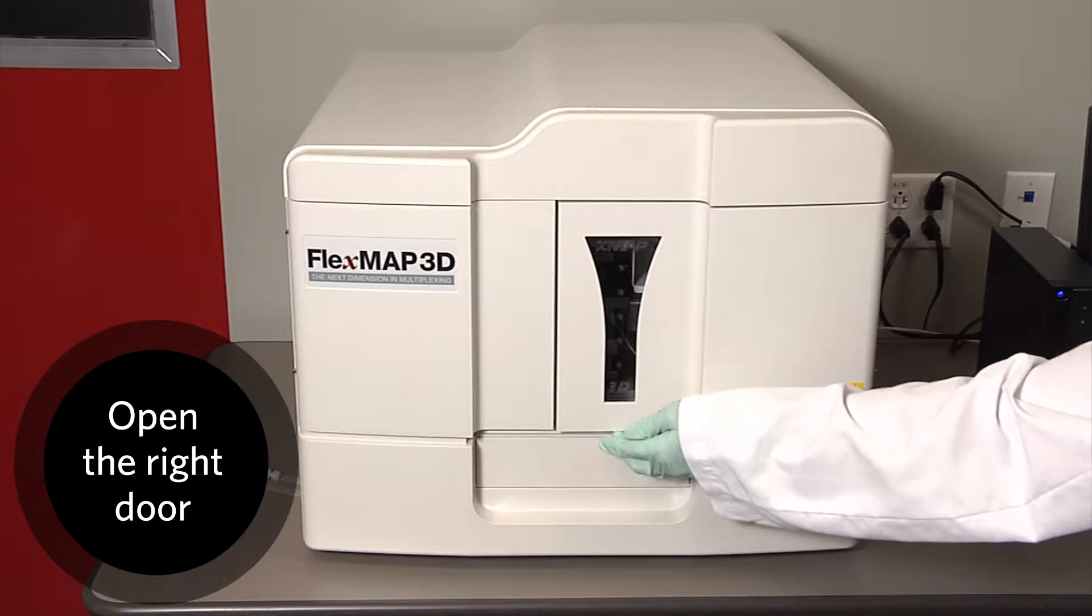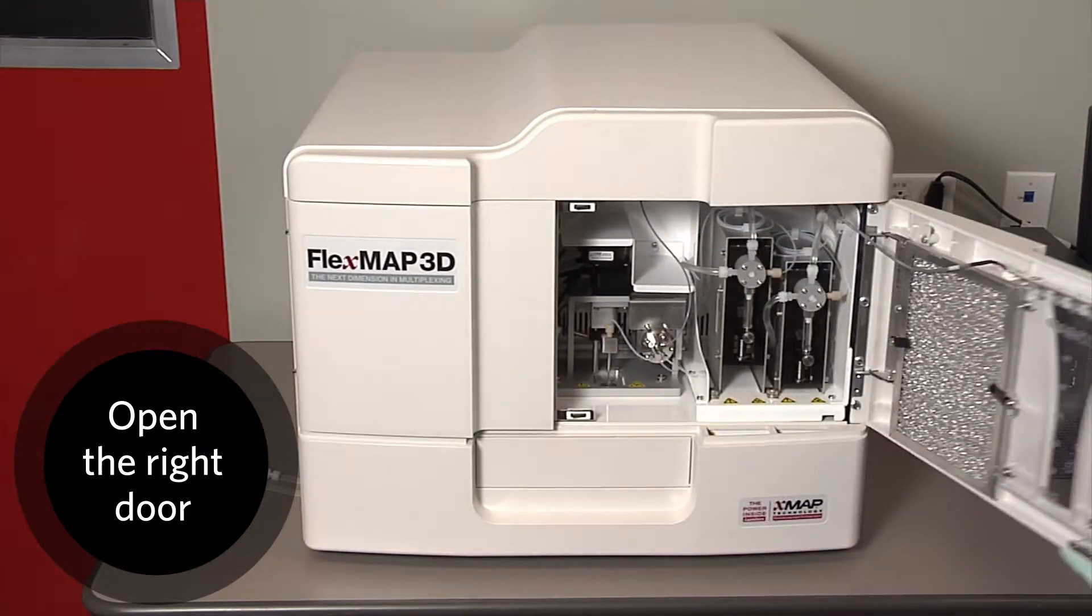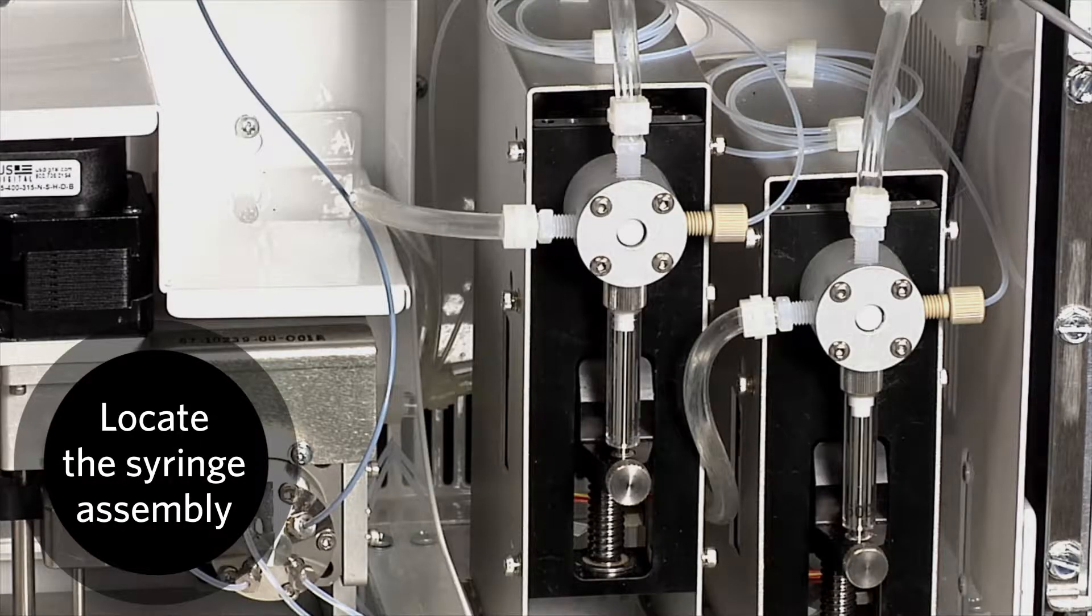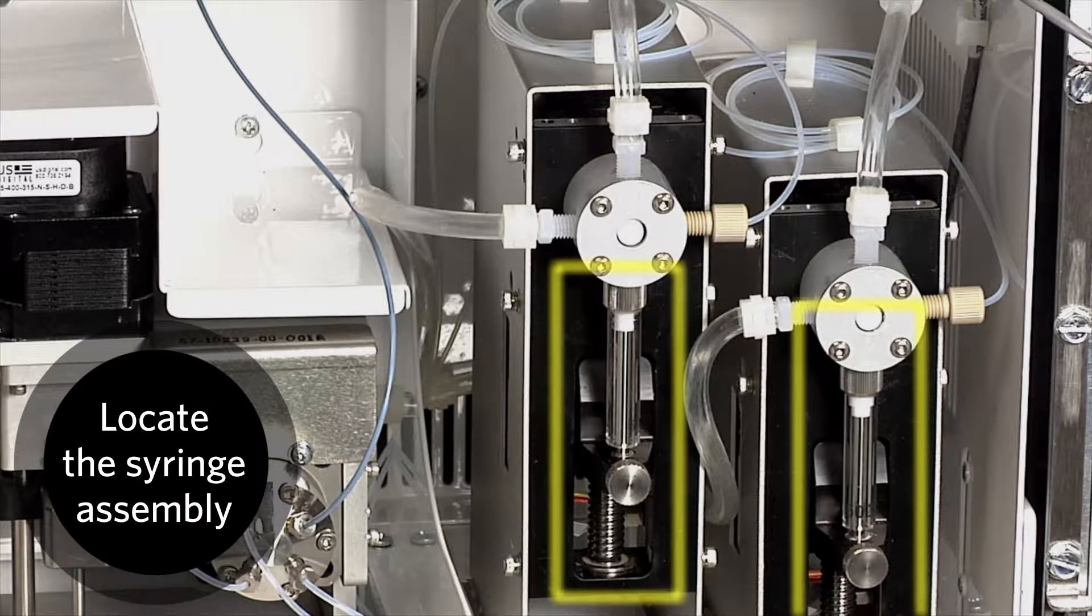Open the right front door of the FlexMap 3D instrument. Locate the syringe assemblies. Look for the glass cylinder with the metal rod plunger inside.